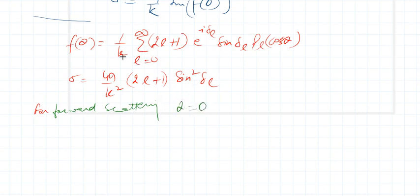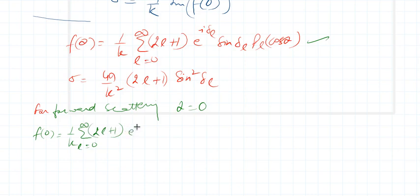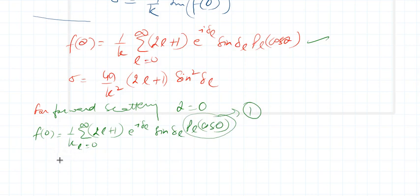For forward scattering, theta is equal to 0. So if I put theta equal to 0, then f(0) is equal to (1/k) times the summation over L from 0 to infinity of (2L+1) e^(iδ_L) sine(δ_L) times P_L(cos 0). Let me write this down clearly and then expand the exponential term.